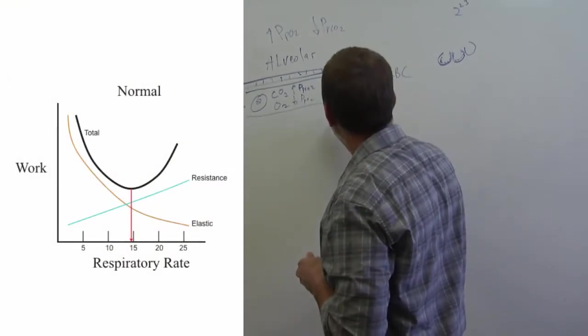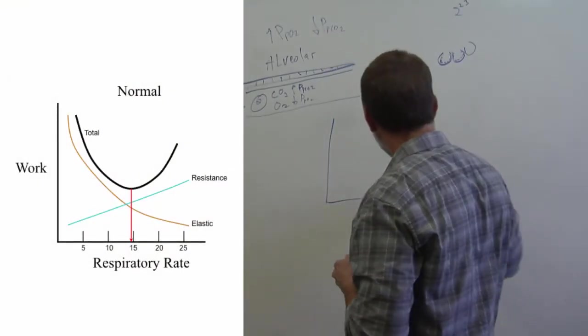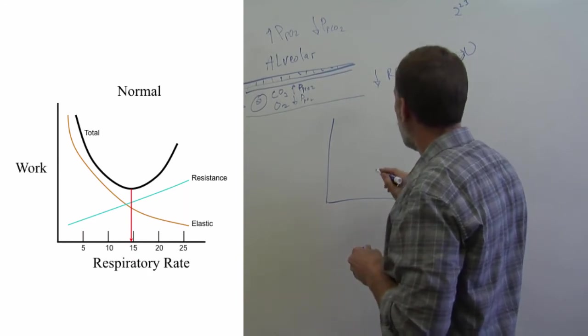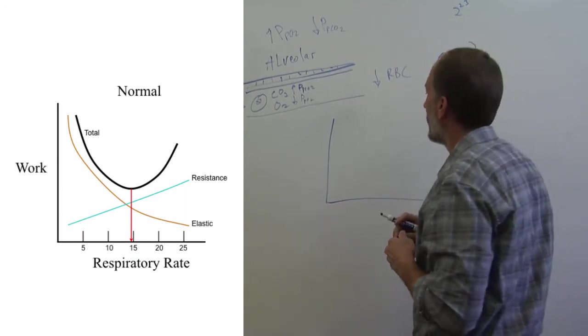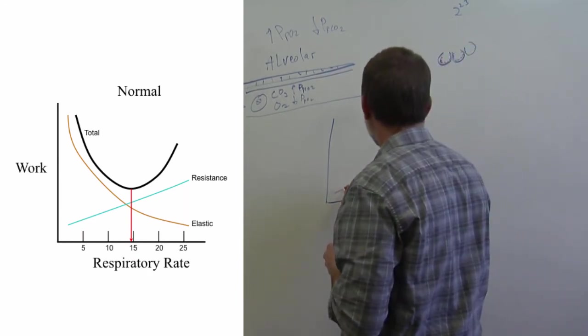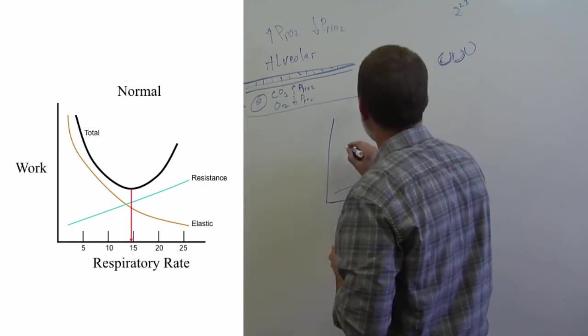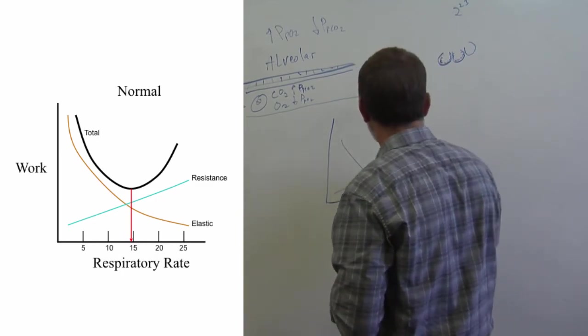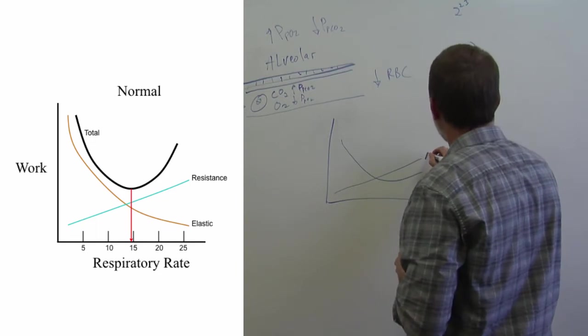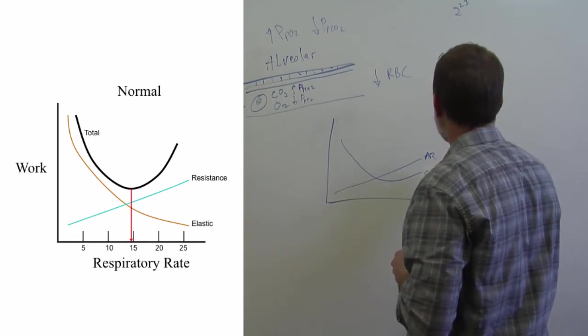Another thing you can look at with work, and I don't know if this is something you guys have discussed, but if you look at it, there's two different types of work. There is airway resistance work and there is elastic work. And so this is airway resistance. And this is elastance.